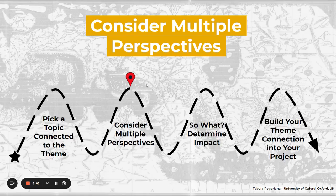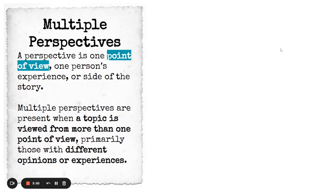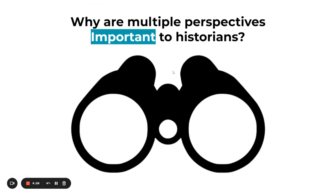Considering multiple perspectives is crucial for history and research. A perspective is defined as one point of view — one person's experience or side of the story. Multiple perspectives are present when a topic is viewed from more than one point of view, primarily those with different opinions or experiences.